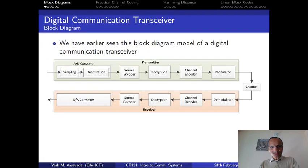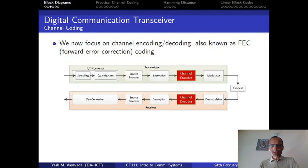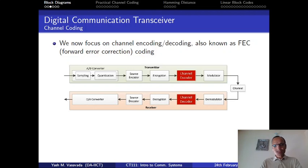So these are the slides that we have already seen. I'm just going to flip over them. This is the overall diagram of digital communication transceiver. And this is the source encoding. The topic of this particular set of slides is the channel coding.